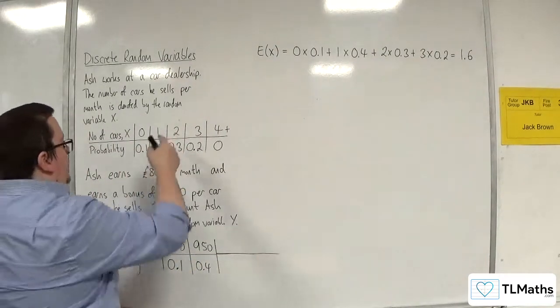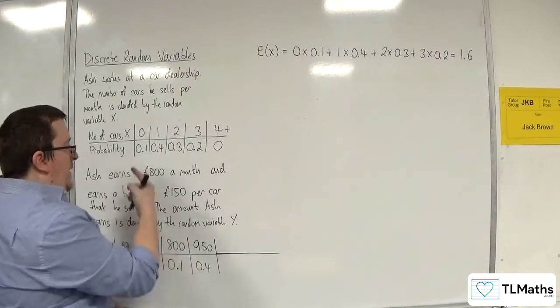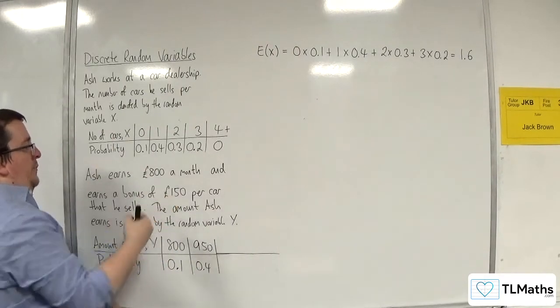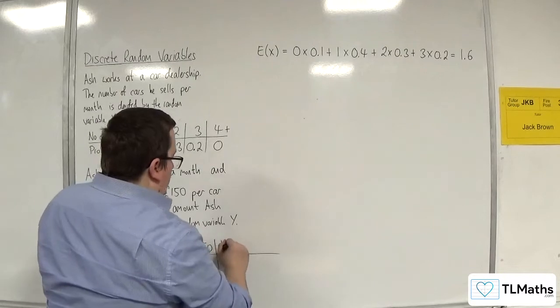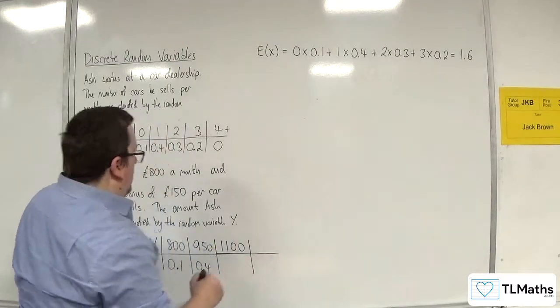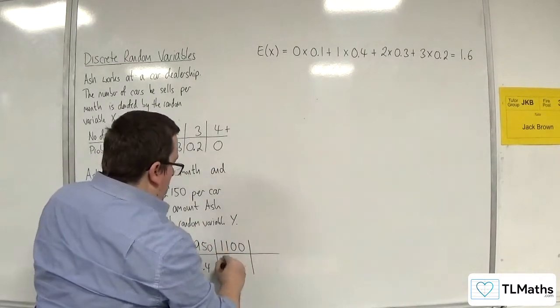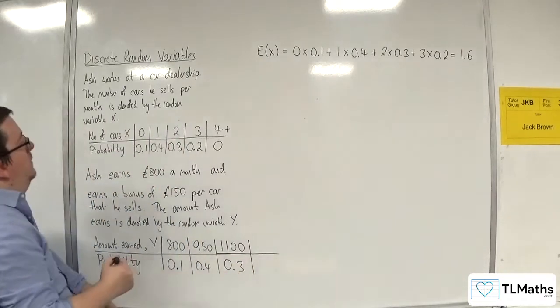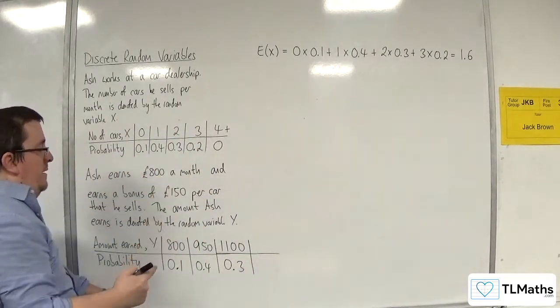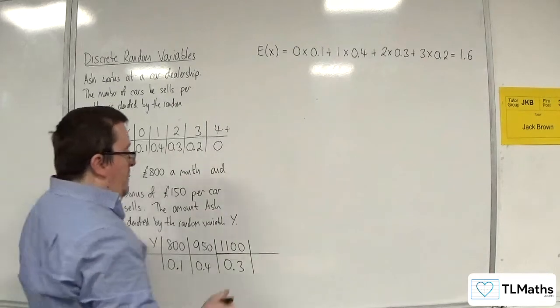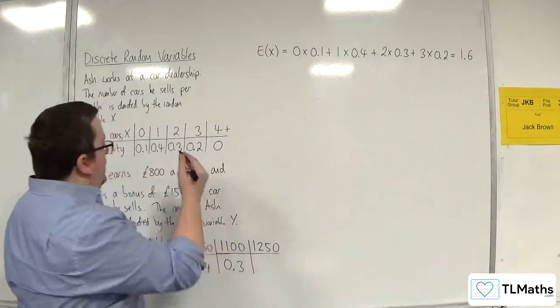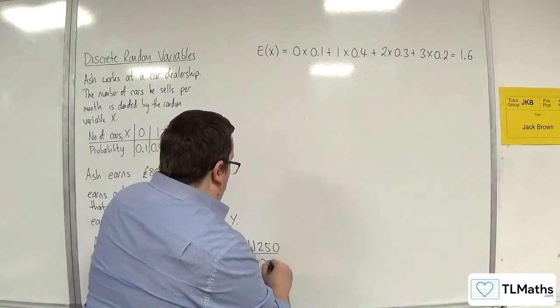Right. If he sells two cars, then he's going to get £800 plus two lots of £150. So, that would be £1,100. And that's for the probability of 0.3. And if he sells three cars, then he earns another £150 on top. So, that's £1,250. So, that's for the probability of 0.2.